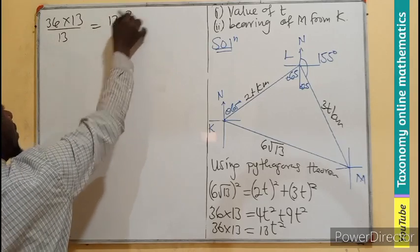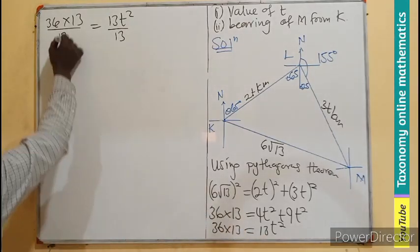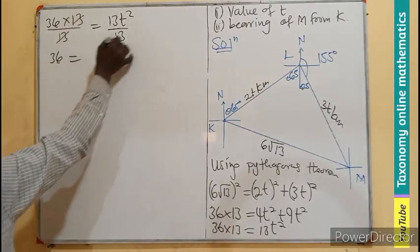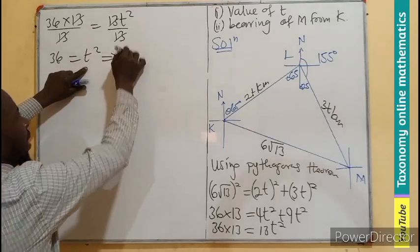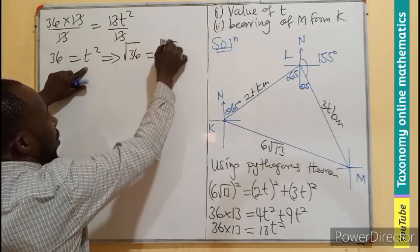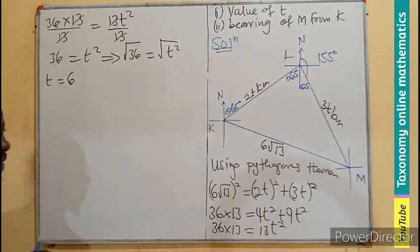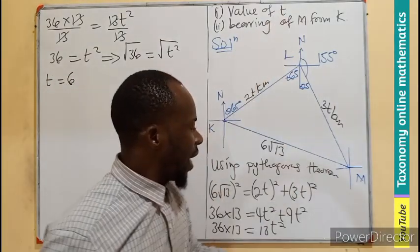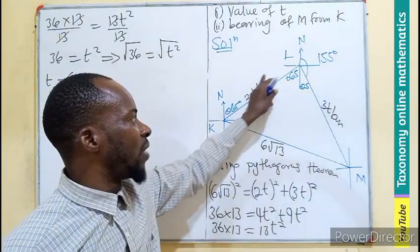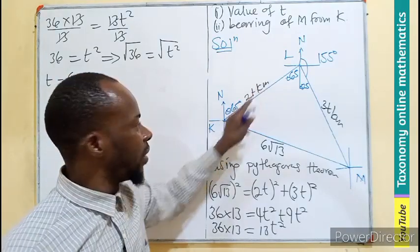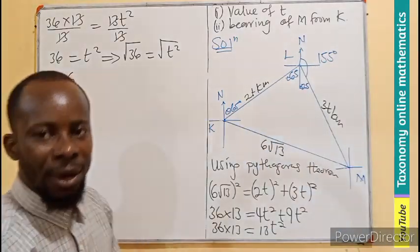13T squared divided by 13, divided by the coefficient of T squared. This will cancel this. So 36 will be equal to T squared. That implies that if I take the square root of 36 and the square root of T squared, that makes our T to be 6. So the value of T we are looking for is 6. Meaning 6 times 2 will have given us 12 kilometers. 6 times 3 will be 18, so 18 kilometers.